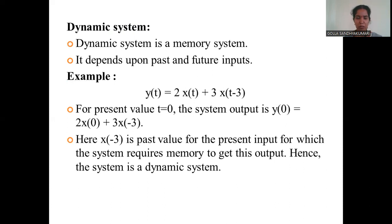A dynamic system is a memory-based system that depends upon past and future inputs. For example, Y(t) = 2·X(t) + 3·X(t − 3). Substituting t = 0 gives Y(0) = 2·X(0) + 3·X(−3). Since X(−3) is a past value, the system is classified as a dynamic system.